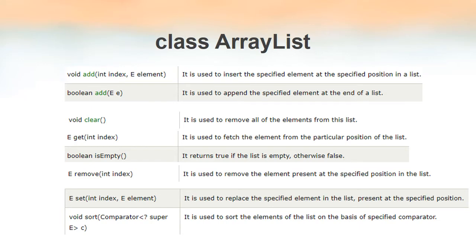Since ArrayList is a class in Java, it has a collection of methods. Some of the commonly used methods are listed here. The first is void add(int index, E element) — from the name it is clear this is for adding an element at a particular index. This method requires two parameters: the index at which to insert the new element, and the element itself.